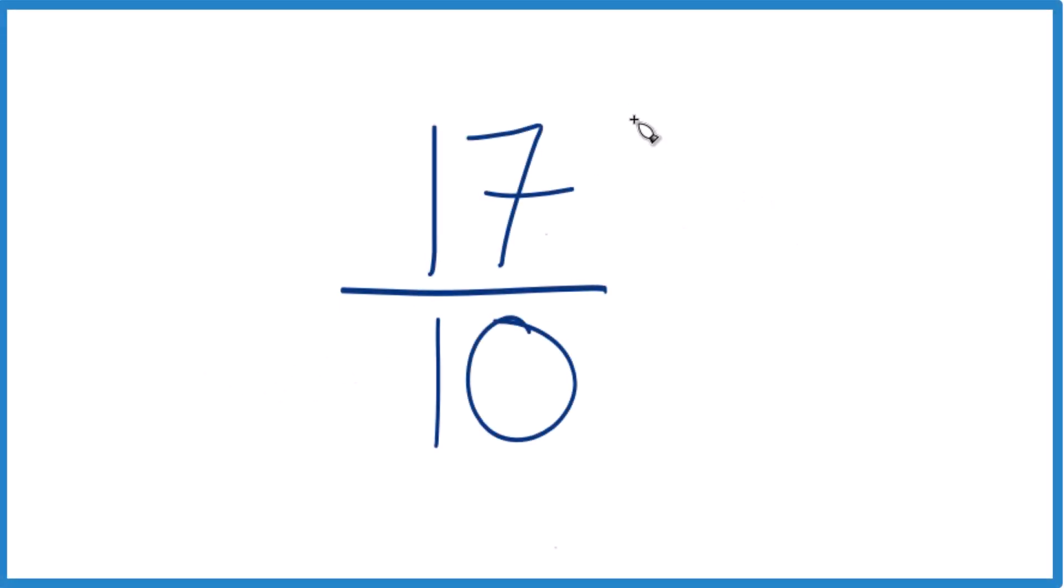So let's simplify the fraction 17 tenths, and let's also write this as a mixed number. When we're simplifying fractions, we need to find a whole number that goes evenly into both 17 and 10, but there isn't any whole number that goes into 17 and 10 other than one.